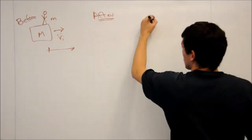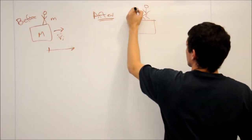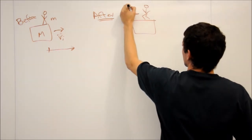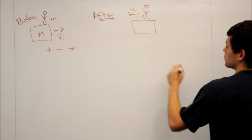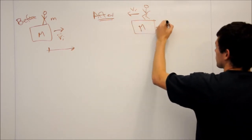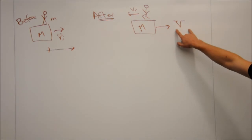So immediately as the problem starts, the man starts running to the left with speed VR, standing for V relative, which is velocity relative to the block. And the block is, of course, still moving with some velocity, big V.